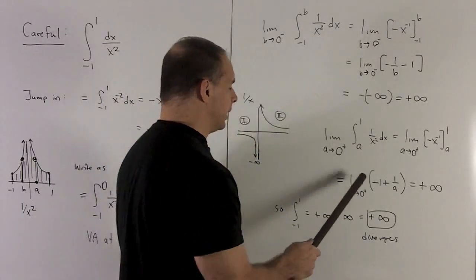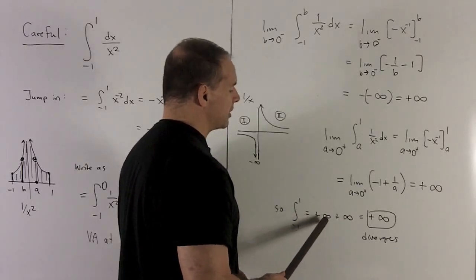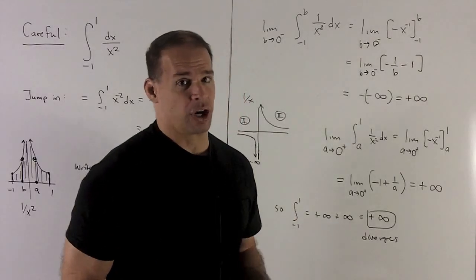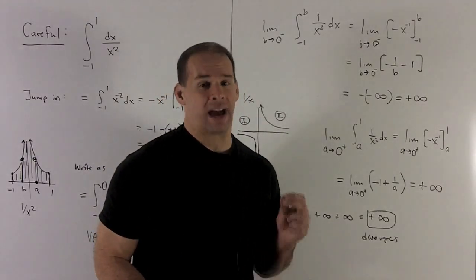So that's going to give me improper integral from minus 1 to 1, plus infinity plus infinity gives me plus infinity, and my answer diverges. So the correct answer here is not minus 2, it's diverges.